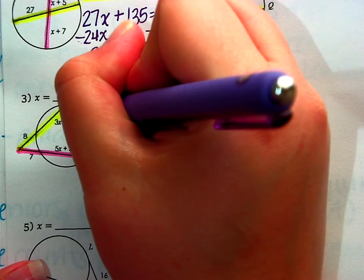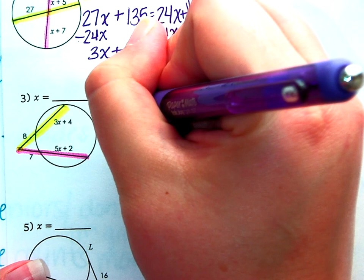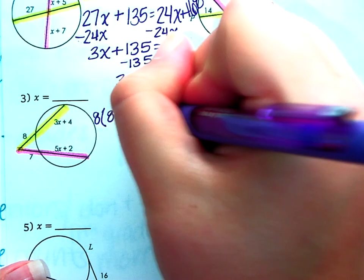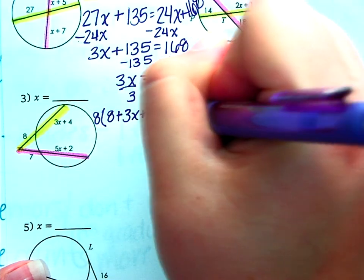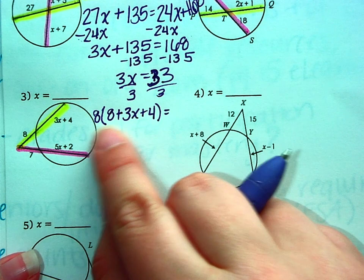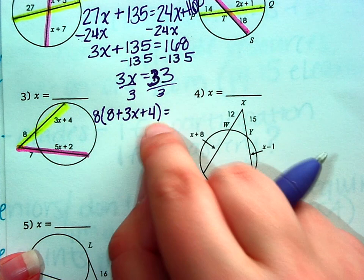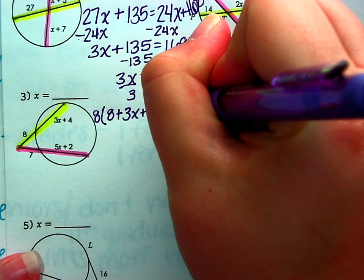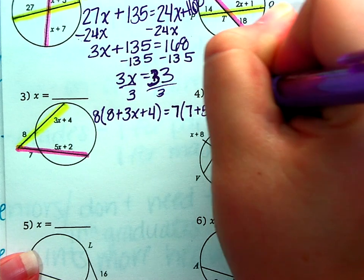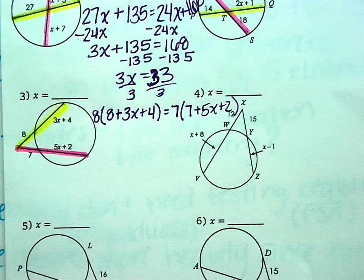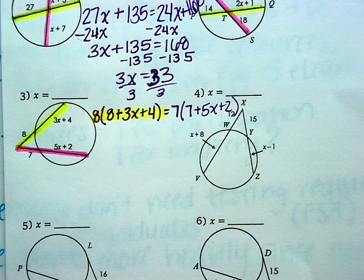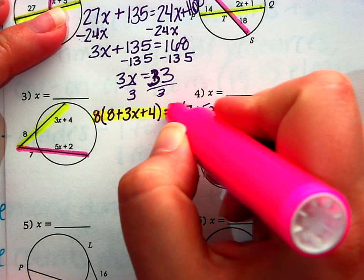So our setup, we're going to do 8 times 8 plus 3x plus 4. So multiplying the outside piece, 8 times the pieces added together, 8 plus 3x plus 4. Same for the pink side, 7 times 7 plus 5x plus 2. So that was the yellow secant. This is the pink.